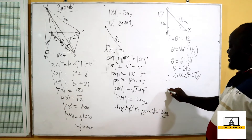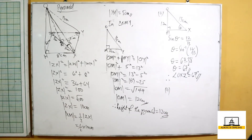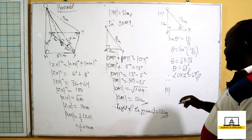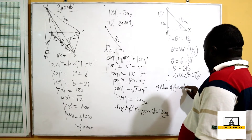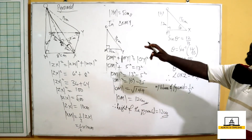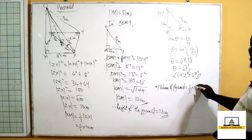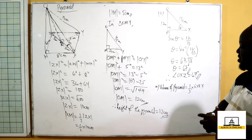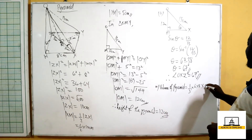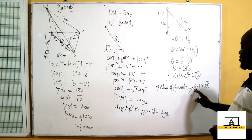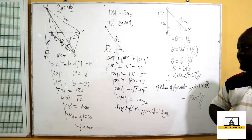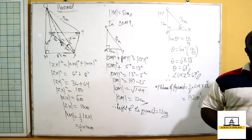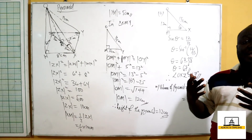Finally, we find the volume of the pyramid. Volume equals one third times the area of the base times the height. The area of the rectangular base is 6 times 8, and the height is 12 centimeters. So volume equals one third times 6 times 8 times 12, which gives us 192 cubic centimeters. I encourage you to go ahead and practice more with pyramids that have triangular bases, square bases, and so on.